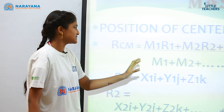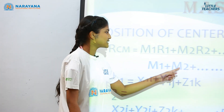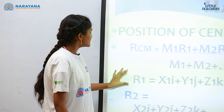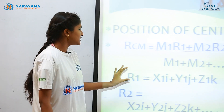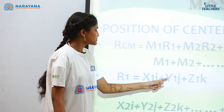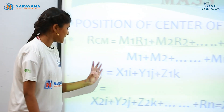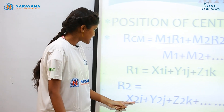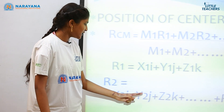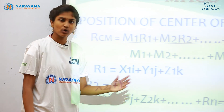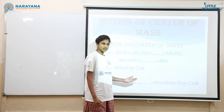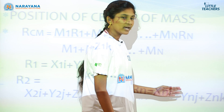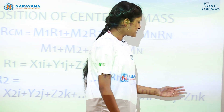These are divided by the total masses, that is m1 plus m2 plus so on mn. Here r1 is in the form x1·i plus y1·j plus z1·k, and r2 is in the form x2·i plus y2·j plus z2·k, and so on rn is in the form xn·i plus yn·j plus zn·k.